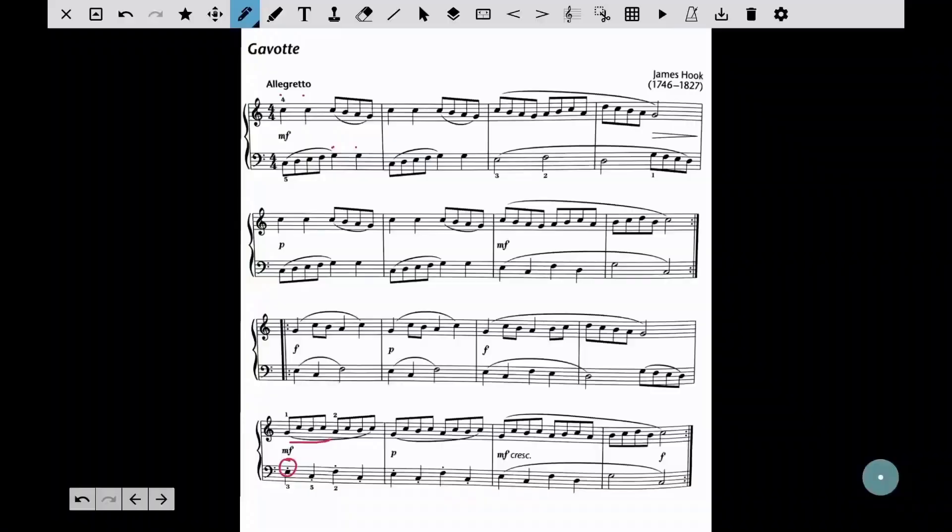So those are a couple of ideas just to make up some exercises to work with that legato, staccato, different articulation in each hand. And then when you come back to put it in the piece, so if we go back to the little Hook gavotte, and we look at that last line again, what we can do is maybe just try the very first beat.